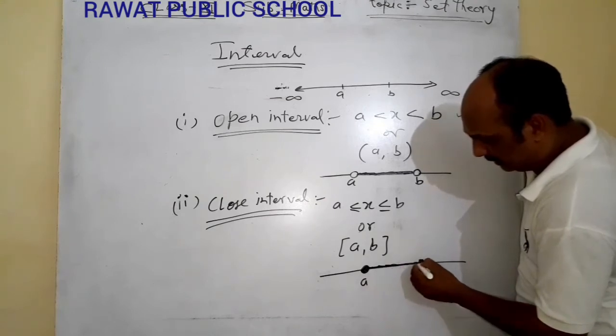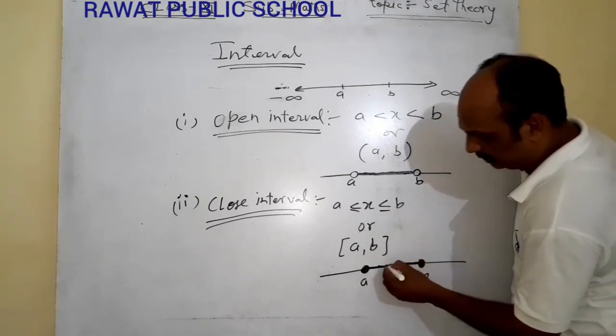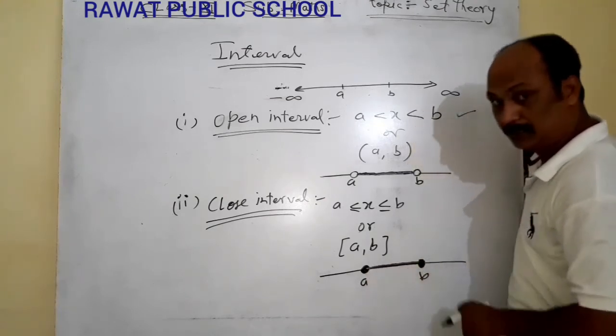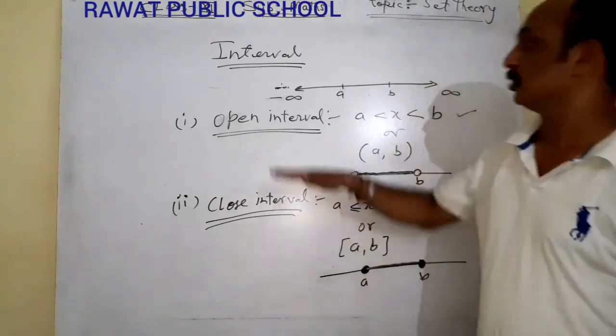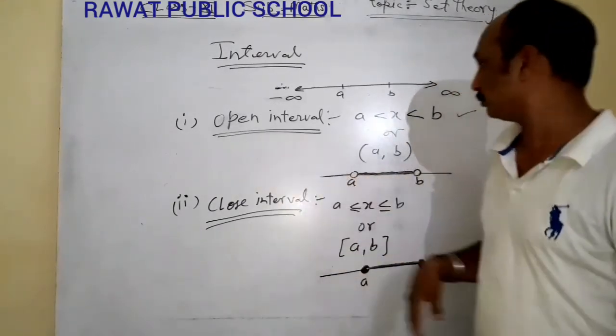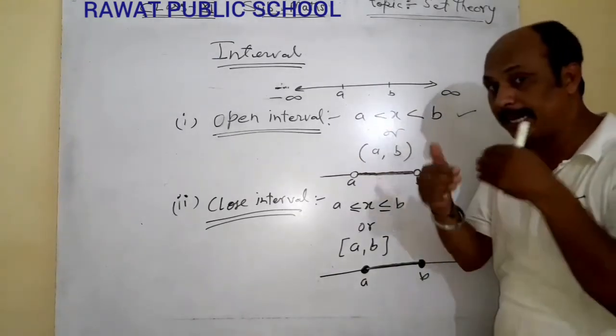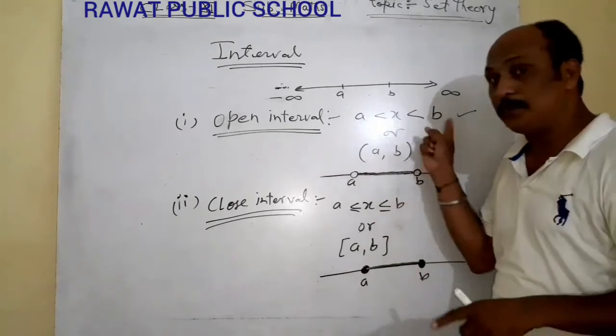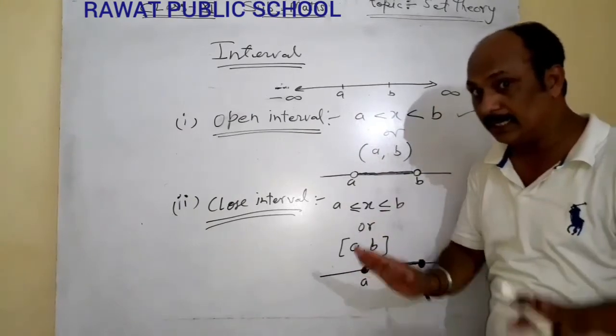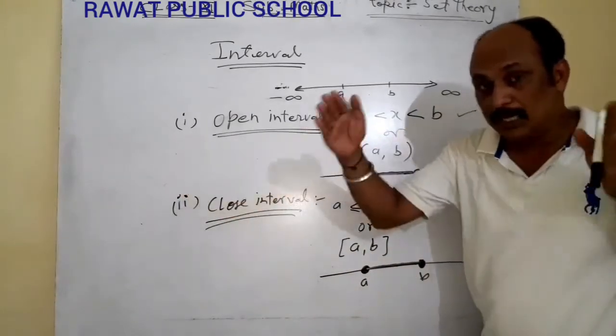So we have close interval on the number line, then we draw a dark circle at A and B and we draw dark line in between A and B. For open interval, any number in between A and B, but A and B not included, except A and B.